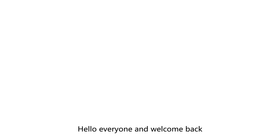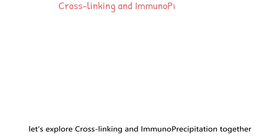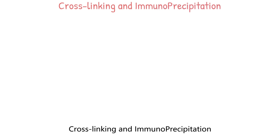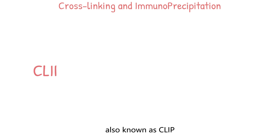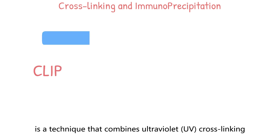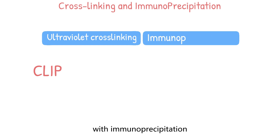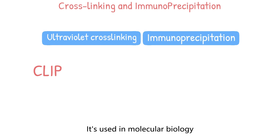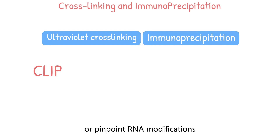Hello, everyone, and welcome back. Today, let's explore crosslinking and immunoprecipitation together. Crosslinking and immunoprecipitation, also known as CLIP, is a technique that combines ultraviolet crosslinking with immunoprecipitation. It's used in molecular biology to analyze protein-RNA interactions or pinpoint RNA modifications.